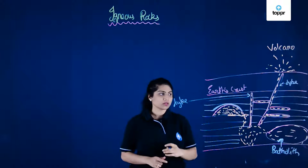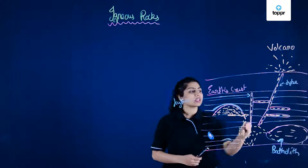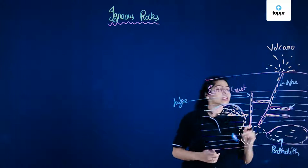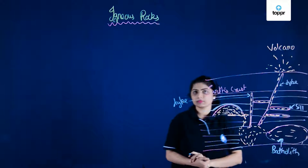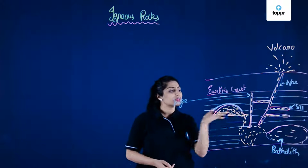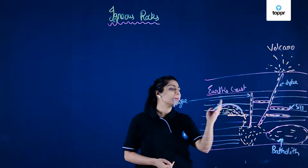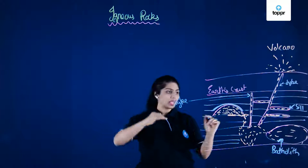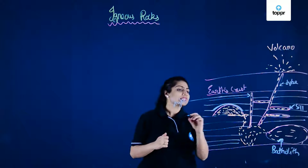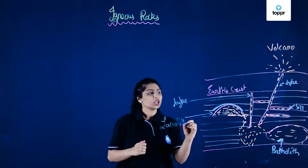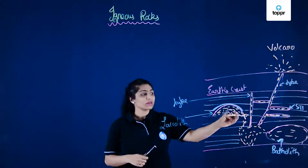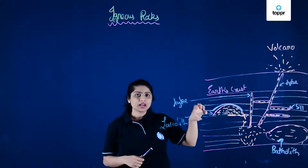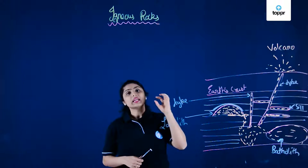Sometimes magma runs horizontally between the layers of existing rocks and hardens there — this horizontal intrusion is called a sill. And sometimes when magma flows horizontally between the layers, it forms a big dome-shaped structure that pushes the overlying rock layer upward, forming a dome shape with a flat base. This is called a laccolith. When the magma cools and hardens in this form, it creates a laccolith — also an intrusive igneous rock.